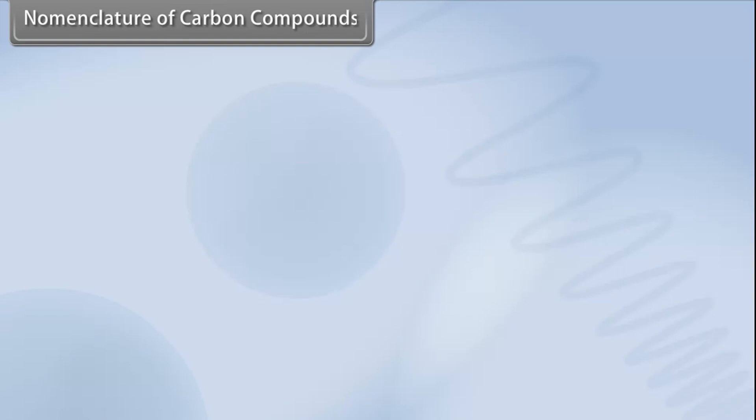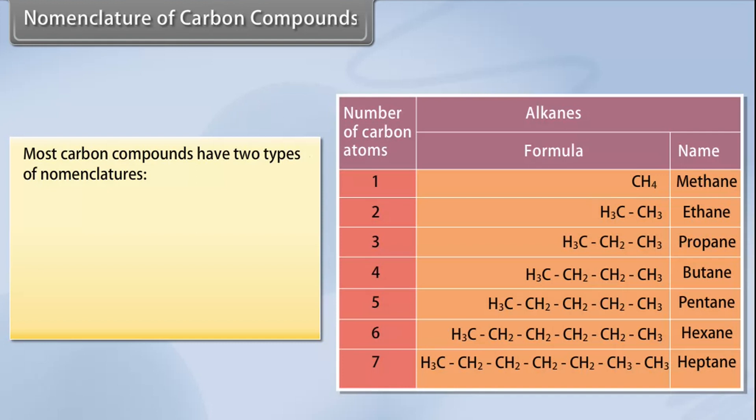Nomenclature of carbon compounds: The system of assigning a proper name to a particular carbon compound is called nomenclature. Most carbon compounds have two types of names.